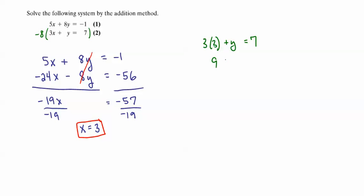So, that's 9 plus y is 7, subtract 9 on both sides, and we end up with y being equal to negative 2.